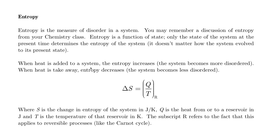In general, when heat is added to a system the entropy increases — the system becomes more disordered. Think of a solid: a solid is a relatively ordered system. When we add heat to it, that solid can become a liquid, and liquids have a more disordered state than solids. When heat is taken away, entropy decreases and the system becomes less disordered. The change in entropy is a function of the heat in or out divided by the temperature of the reservoir in Kelvin. Reversible cycles like the Carnot cycle have a change in entropy that doesn't affect the universe.